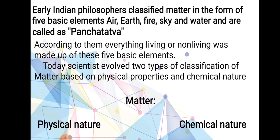Early Indian philosophers classified matter in the form of five basic elements: air, earth, fire, sky, and water, and these are called pancha tattva. According to them, everything living or non-living was made up of these five basic elements. But today scientists have evolved two types of classification of matter based on physical properties and chemical nature. In this chapter we will study about the physical nature of matter.